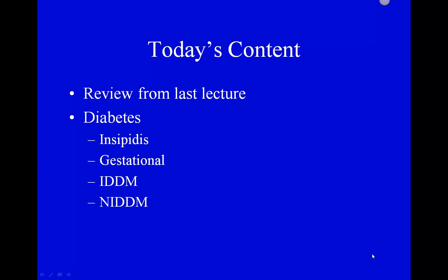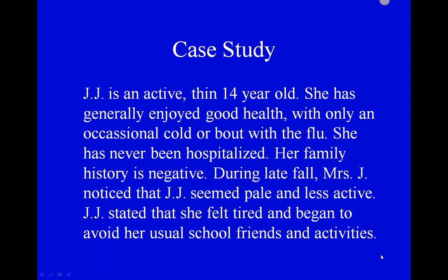We'll talk about four types of diabetes. As usual, we start with a case study. As you read, pick out things that help us know there's something wrong with JJ. She's been very healthy, but now she seems pale, has decreased activity level, and feels tired. Her parents noticed she's avoiding her usual school friends and activities. Doing a differential diagnosis for a 14-year-old with these symptoms, we might consider drug use or depression.